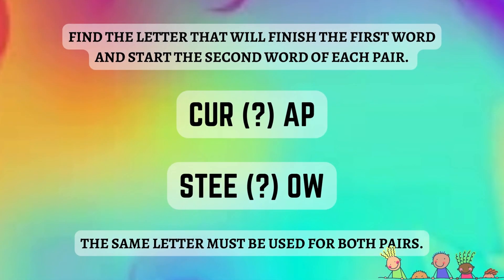And this is the last brain teaser of the day. Numbers move aside, we're going to work on our verbal reasoning skills. Find the letter that will finish the first word and start the second word of each pair. Remember, the same letter must be used for both pairs. What's the missing letter? If you said L, you are absolutely correct. If you put L in place of the question mark, you'd get curl, lap, steel, and low, all of which exist in the English vocabulary. Yay!